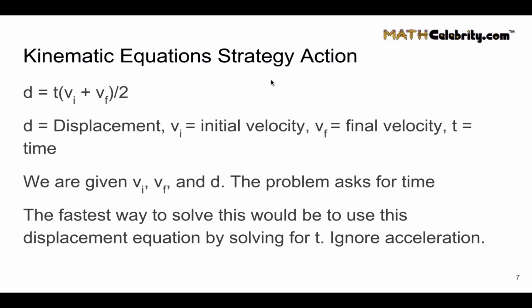So what we do is we take 2 times d and we'd be left with t times v sub i plus v sub f. We divide this by v sub i plus v sub f and we get t. So again, find the kinematic equation out of the four that makes the most sense. If you have to rearrange, do so, isolate and solve.